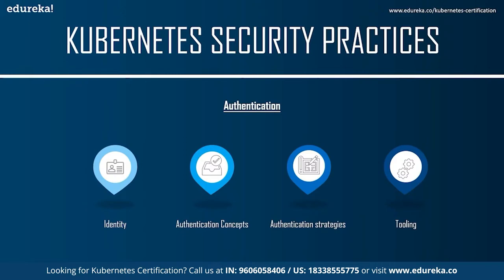The authentication flow works as follows: the client presents its credentials to the API server, the API server uses one of the configured authentication plugins, the identity provider verifies the request including username and group membership, and if credentials are in order the API server moves on to check permissions — otherwise it returns an HTTP 401 Unauthorized error and the request fails. Kubernetes also supports user impersonation, where a user can act as another user, useful for debugging authorization issues.